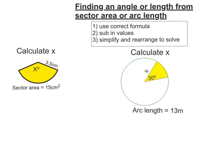The first thing, as it says up here in these steps, is to pick the correct formula. For this first question, I'm given the sector area, so it makes sense to use the sector area formula. The sector area formula is: angle over 360 times pi r squared. Remember, you don't get given that in your exam, so you're going to have to learn it.